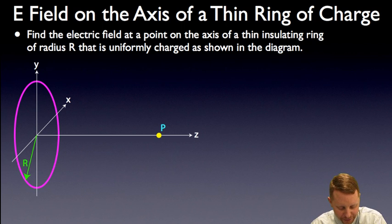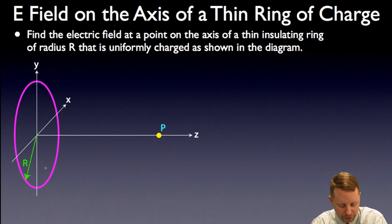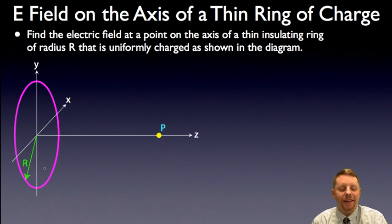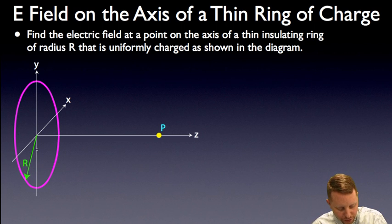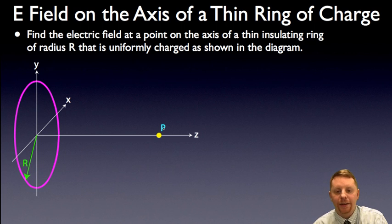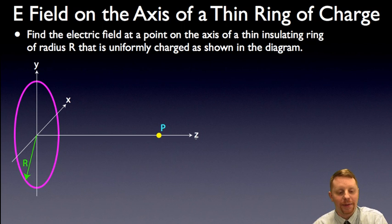Starting with the electric field on the axis here at point P of a thin ring of charge — find the electric field at a point on the axis. If the ring has a radius R and it's uniformly charged as shown in the diagram. Really all of the work, the physics, is in the setup of the problem. We can make a symmetry argument because the hoop is circled around the axis and P is on that axis, so the only electric field we'll have to deal with is in the z direction. Everything else is going to cancel out because it's uniformly charged.